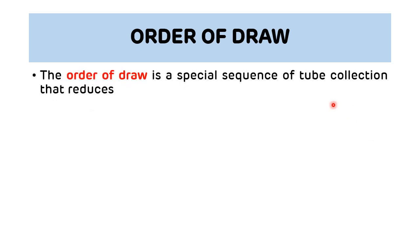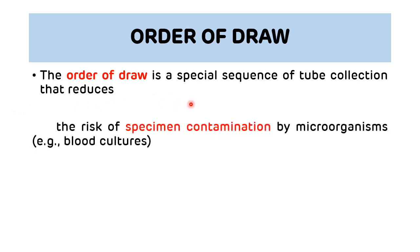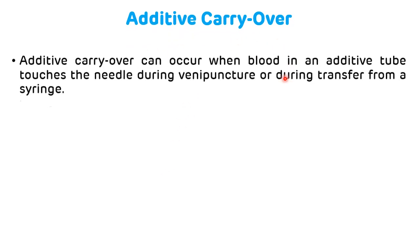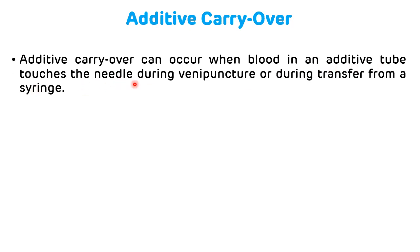Now, order of draw. Order of draw is a sequential order of tube collection that reduces the risk of specimen contamination by microorganisms and additive carryover, which can affect some chemistry tests. Additive carryover can occur when blood in an additive tube touches the needle during venipuncture or during transfer from a syringe. EDTA carryover causes more problems than any other additives, and heparin causes the least.